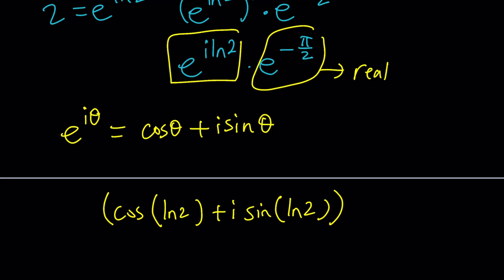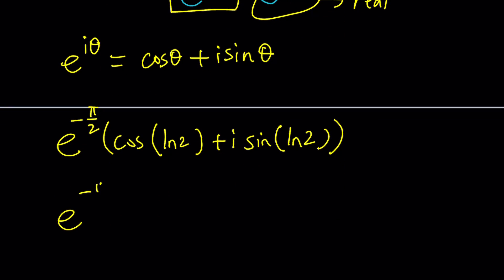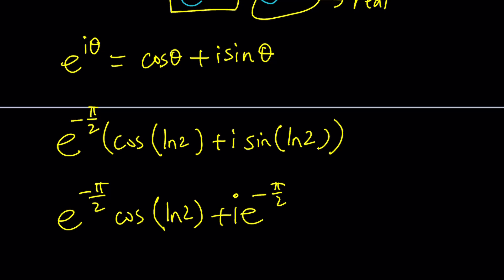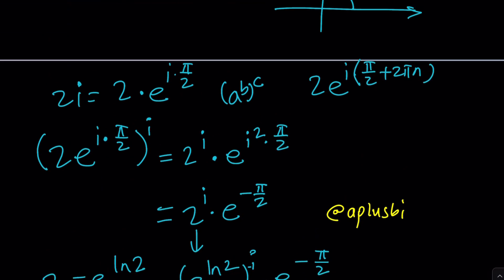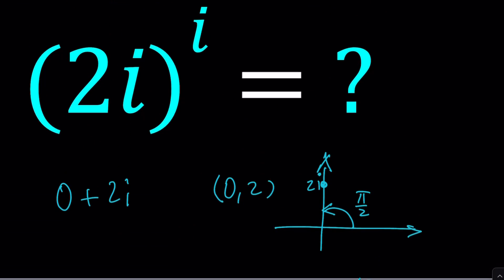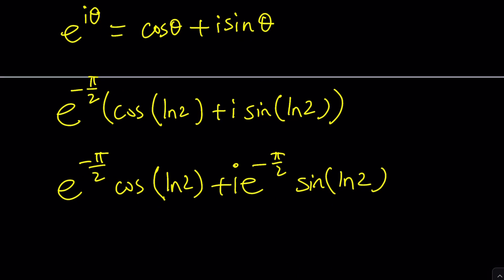Let's go ahead and write the real part first: e to the power negative pi over 2. Distributing, we can write the full expression as e to the power negative pi over 2 times cosine(ln 2), plus i times e to the power negative pi over 2 times sine(ln 2). And that is the answer in principal form for 2i to the power i. You can go ahead and compare this to i to the power i, which is slightly different.